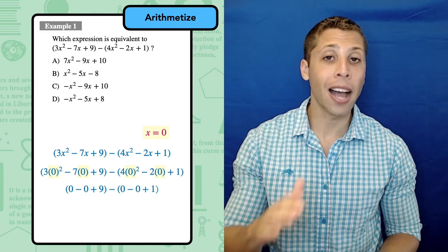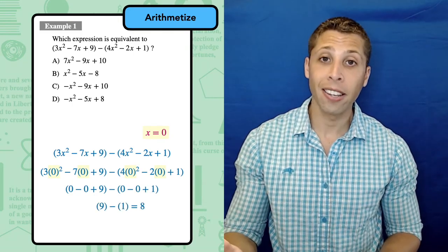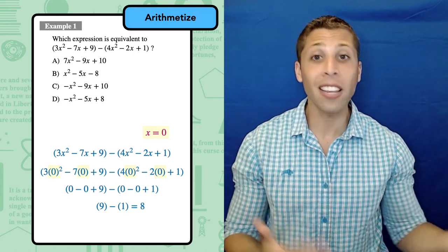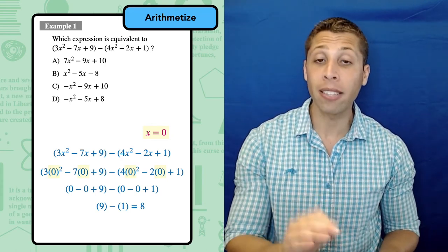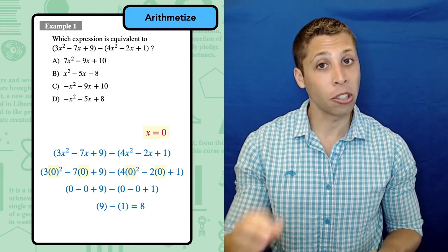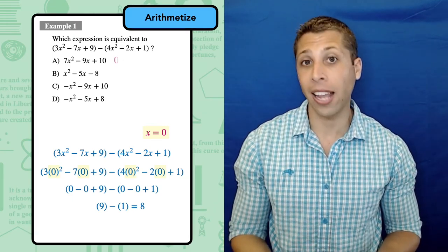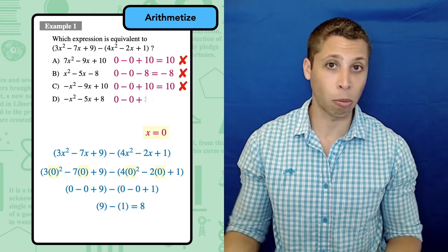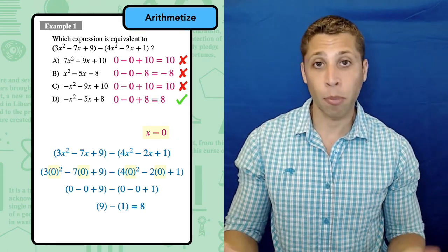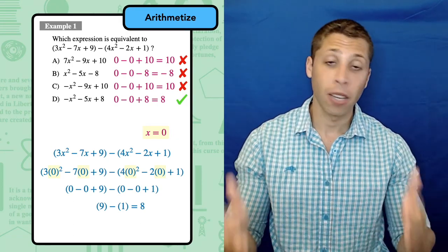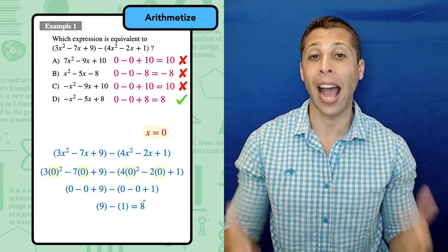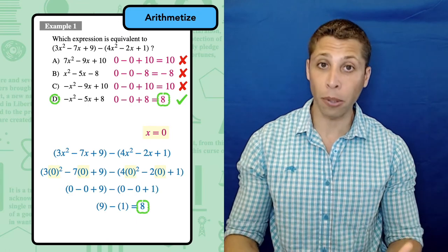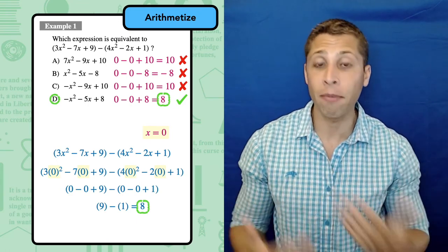Now that's not an answer, but we can arithmetize the answer choices the same way that we arithmetize the question. And we have to be consistent. I made x equal to zero at the beginning, and x has to stay zero for the answers. But again, since zero is such a conveniently lazy number, most of this algebra just disappears, and I'm left with only the ending numbers of each choice. Choice D gives me eight, so it has to be right. If these are equivalent expressions, then they should give me equivalent numbers when I substitute the same value for my variable. Hopefully you got the same answer when you solved with algebra, but if you added wrong or distributed wrong, then you would have gotten one of the wrong answers without really noticing.